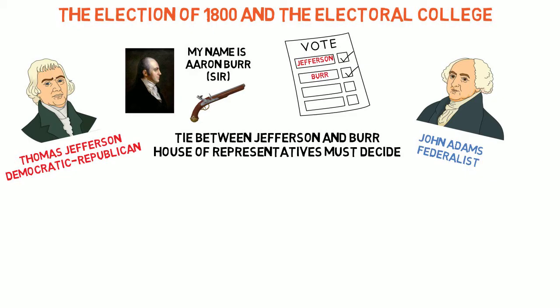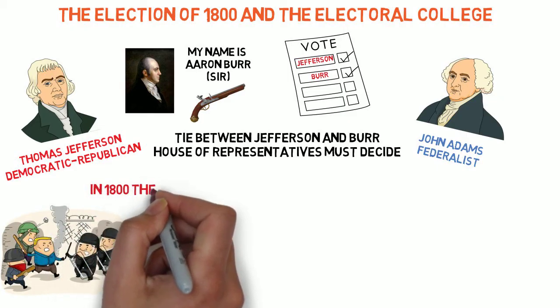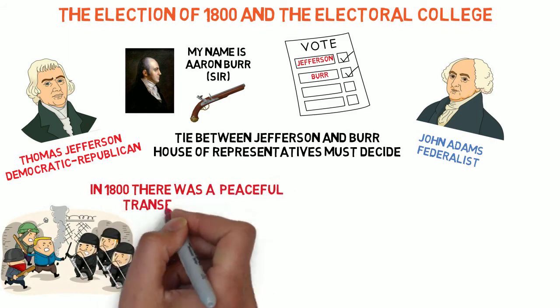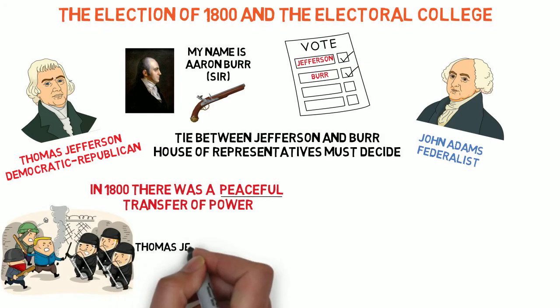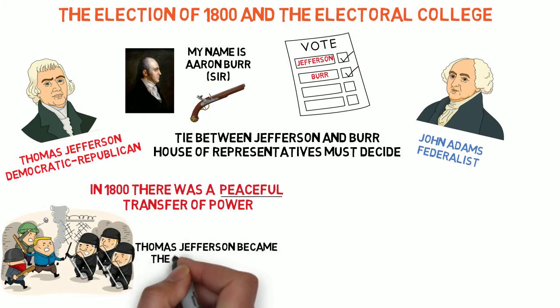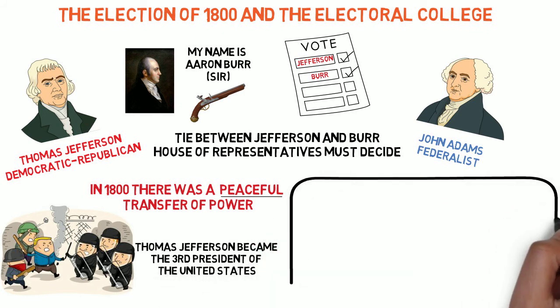There was some fear that the Federalists would take advantage of the situation and refuse to step down, thus ignoring the election results. Many times throughout history this type of situation resulted in political violence and civil unrest, and it seemed that the young United States might suffer the same fate. Remarkably, this did not happen in 1800. There was no violence, and the election of 1800 demonstrated that power in the United States could be peacefully transferred despite strong disagreements between the parties. After several ballots, Thomas Jefferson finally emerged as the winner.